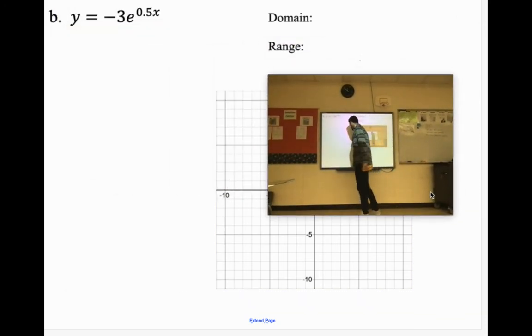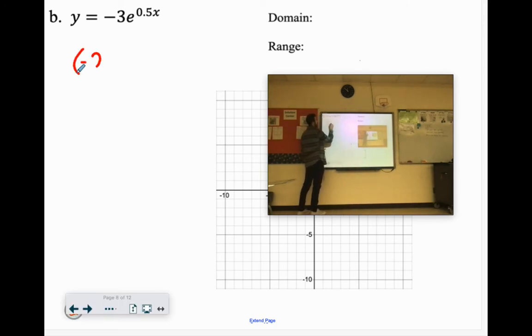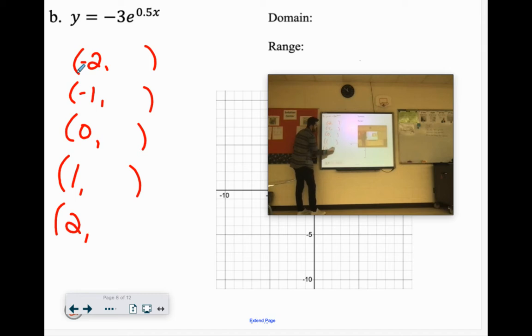Now this is reflected because it's negative 3. So if we substitute in these numbers, now if we put in 0, e to the 0 is 1 times negative 3 is negative 3. So we already know the y-intercept is negative 3. Let's see what we got here.